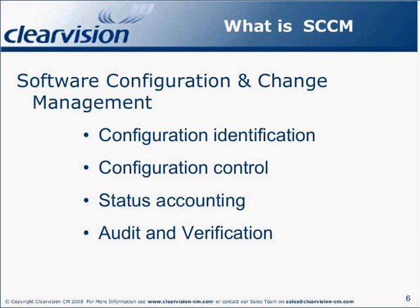Configuration identification is about what code we are working with — formal recognition of the configuration items to control and the level of control to apply to them. Configuration control involves controlling the release of a product and its changes, and controlling access to and changes being made to code, often utilising parallel development via branching and merging strategies. Branching is the ability to split development of the same code into discrete areas to support multiple releases at the same time. Merging is the action whereby branches are integrated back into a single development area. Status accounting is the recording and reporting on the status of all components and configuration items. Audit and verification ensures completeness and consistency among components and traceability of changes.